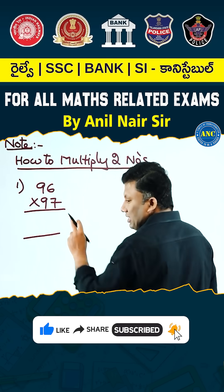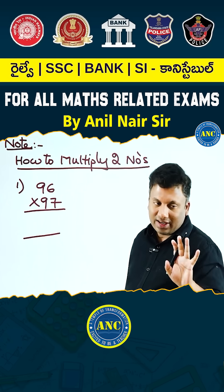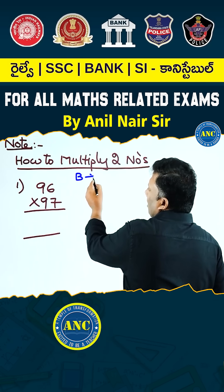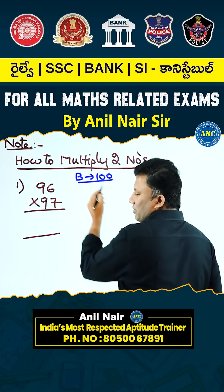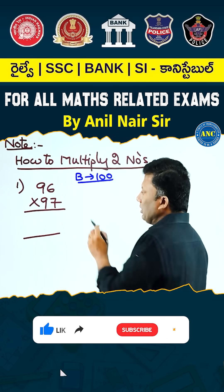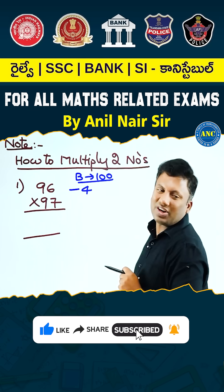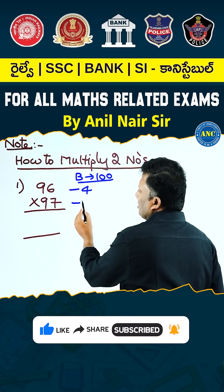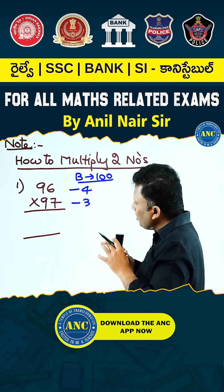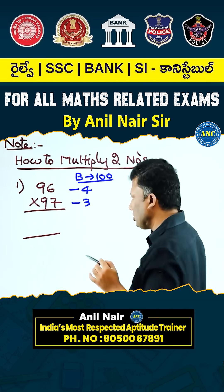Step number one: 96 is nearer to 100, and 97 is also nearer to 100. Both of them are nearer to 100. Base is 100 — B stands for base. Step number two: 96 is 4 less than 100. 97 is 3 less than 100. We write how much each given number is less than or more than the base.